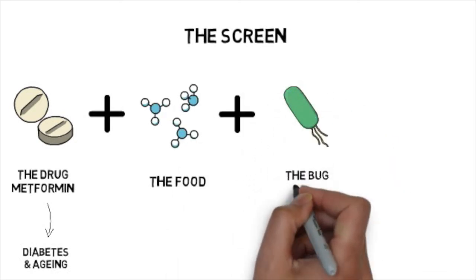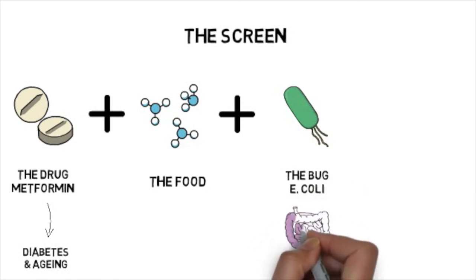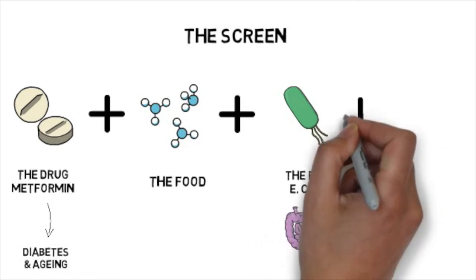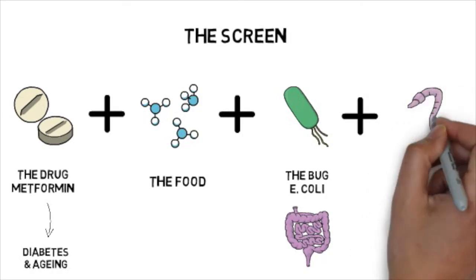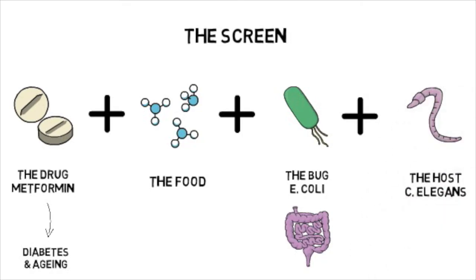The bug E. coli is present in the gut of most healthy humans and is strongly associated with positive effects of metformin. And the host, the nematode worm C. elegans, a great molecular tool that allows us to study the effects of metformin on processes that exist in humans.